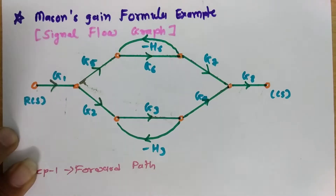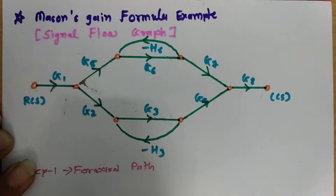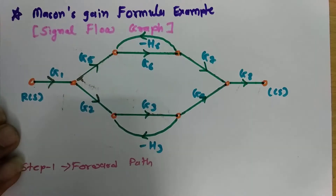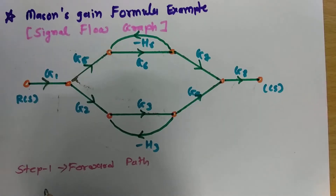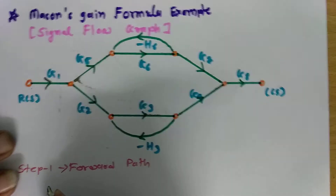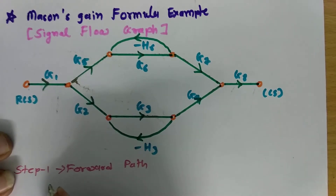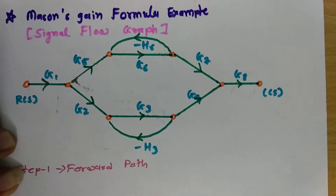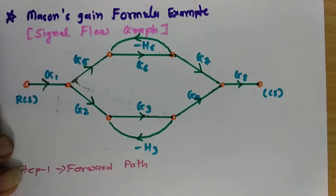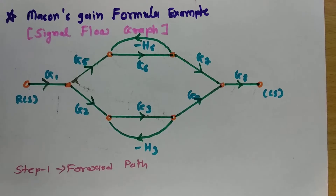In this session, I will continue with examples using Mason's gain formula. We have a signal flow graph, and in this session we are going to solve examples based on the signal flow graph. So let us begin the solution of this example.